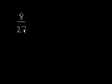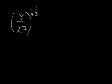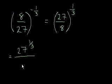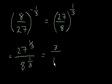Let's try 8 over 27 to the negative 1 third. Immediately when we see that negative, we flip it, so that equals 27 over 8 to the 1 third. That equals 27 to the 1 third over 8 to the 1 third. We know that 27 to the 1 third equals 3, and 8 to the 1 third equals 2. So we've got 3 halves. So 8 over 27 to the negative 1 third is 3 halves. This first problem probably looked very intimidating, but it only took two steps to get there.